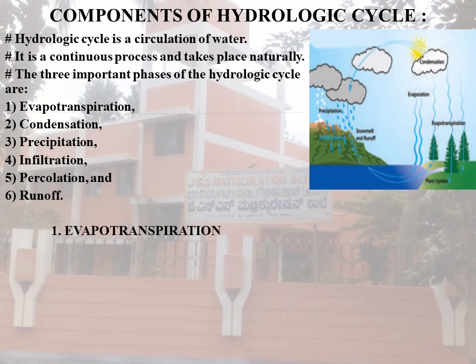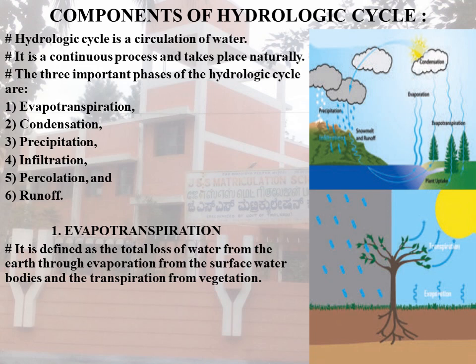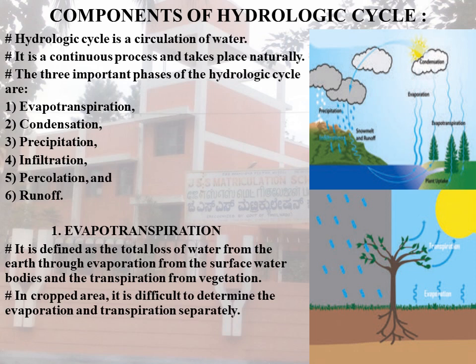Now we are going to learn about the first one: evapotranspiration. It is defined as the total loss of water from the earth through evaporation from the surface water bodies and transpiration from vegetation. In cropped areas, it is difficult to determine evaporation and transpiration separately. The following parts explain these two processes separately.